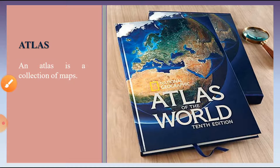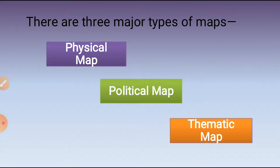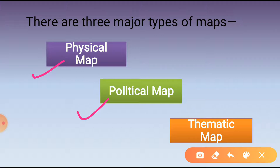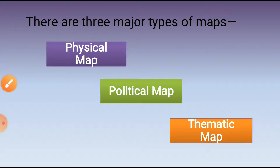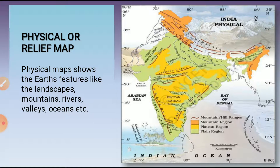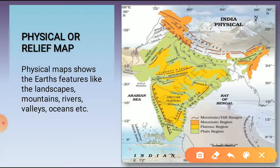Maps may provide more information than a globe. There are three types of maps: physical map, political map, and thematic map. Physical maps are also known as relief maps. These are maps which show the features of the Earth like mountains, plateaus, plains, rivers, oceans, etc.